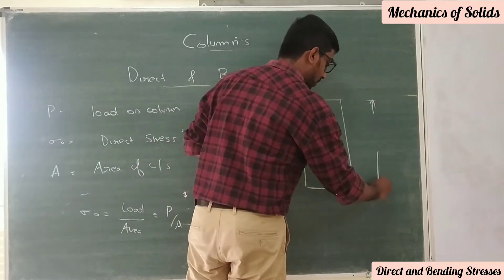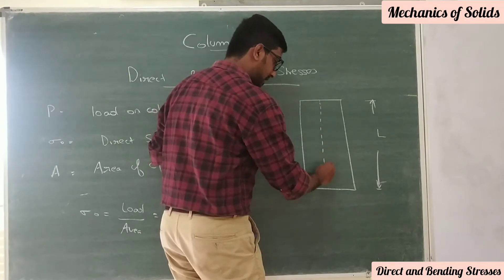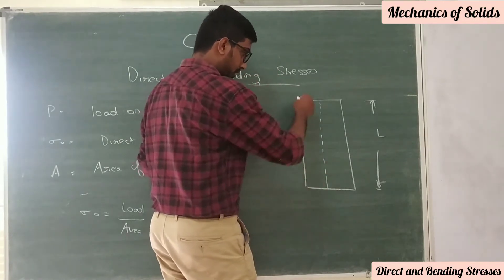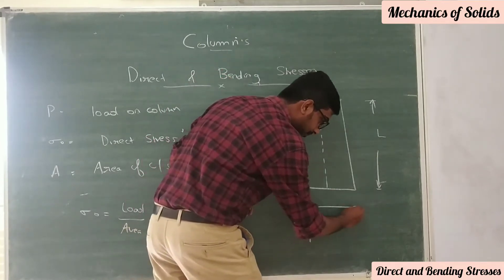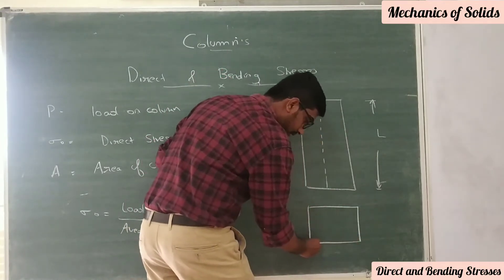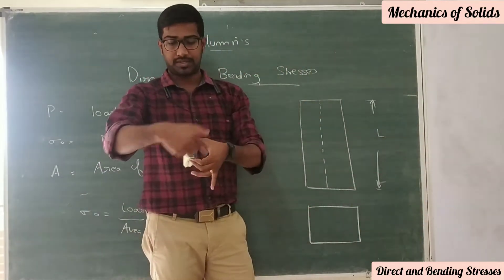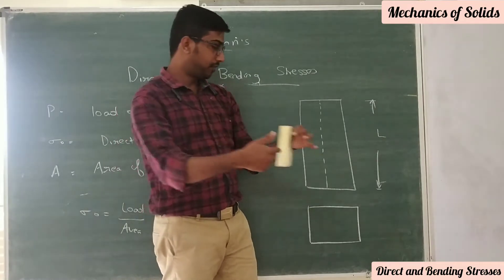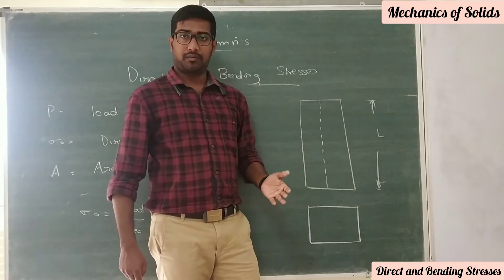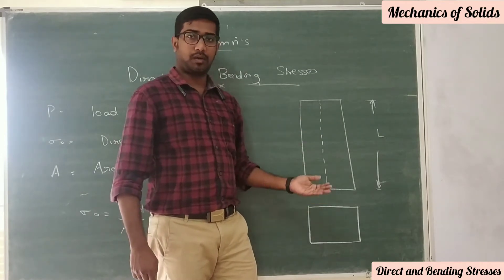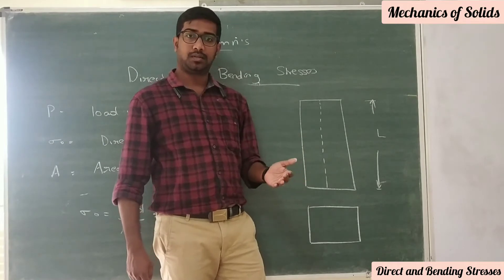Let us consider a column of length capital L. In the plan, suppose this is a rectangular column. This is the top view. If you look at the rectangle, square, circular column, hollow rectangle, hollow circle — these are the cross-section types.